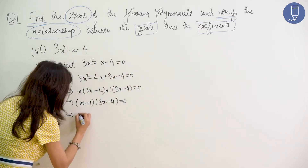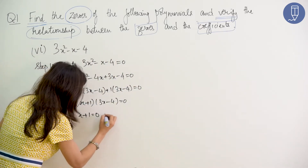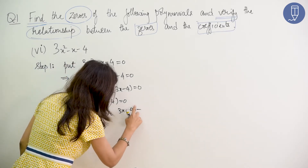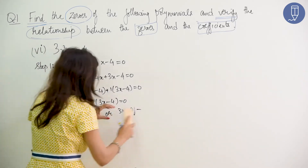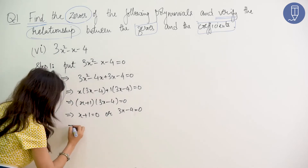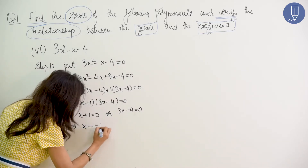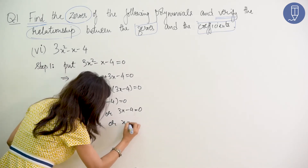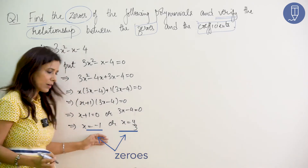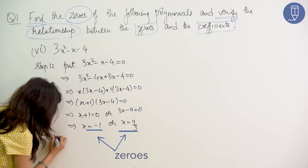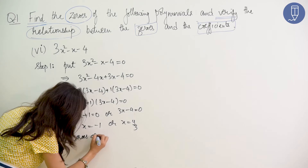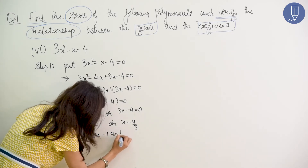So x plus 1 multiplied by 3x minus 4 is equal to 0. This implies x equal to minus 1 or x equal to 4 by 3. Therefore, the zeros are minus 1 and 4 by 3.